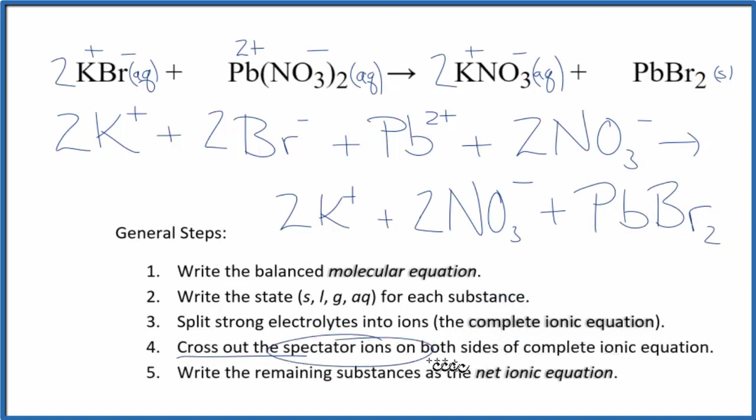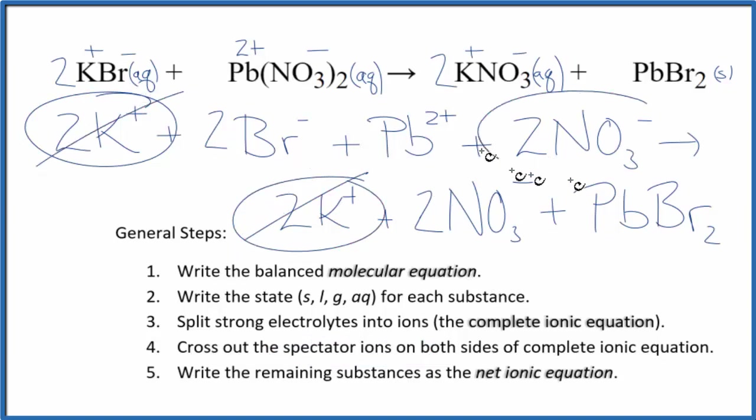Now we can cross out these spectator ions that are on both sides of the complete ionic equation. The reactants, I see there's two potassium ions in the products, the same. Get rid of those. Two nitrates in the reactants, two nitrate ions in the products, get rid of those. And what's left, that's our net ionic equation for KBr plus Pb(NO3)2.